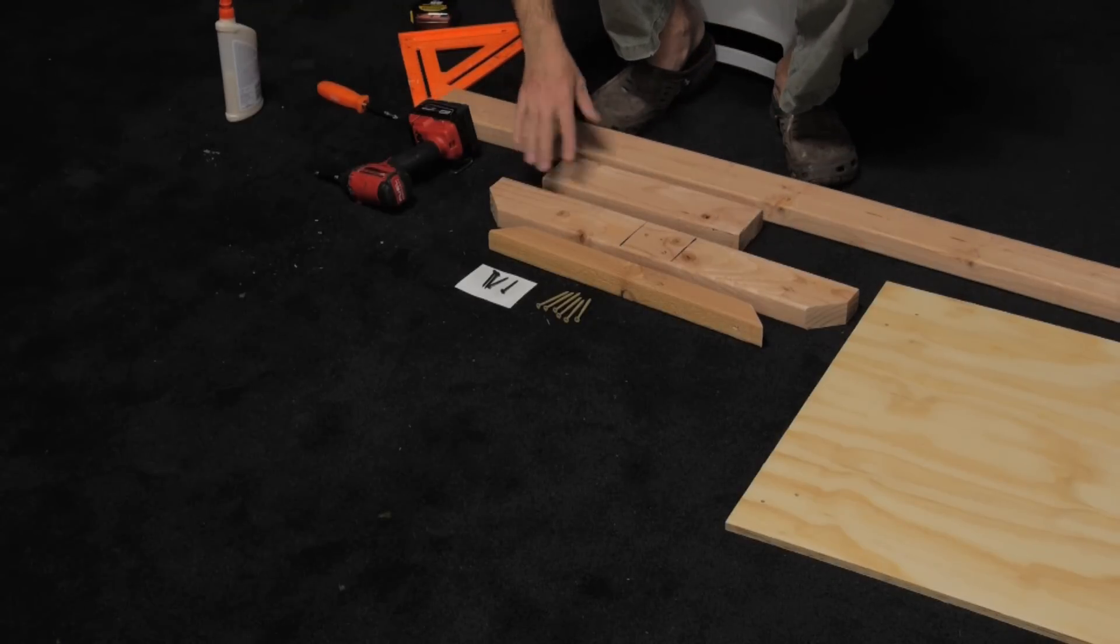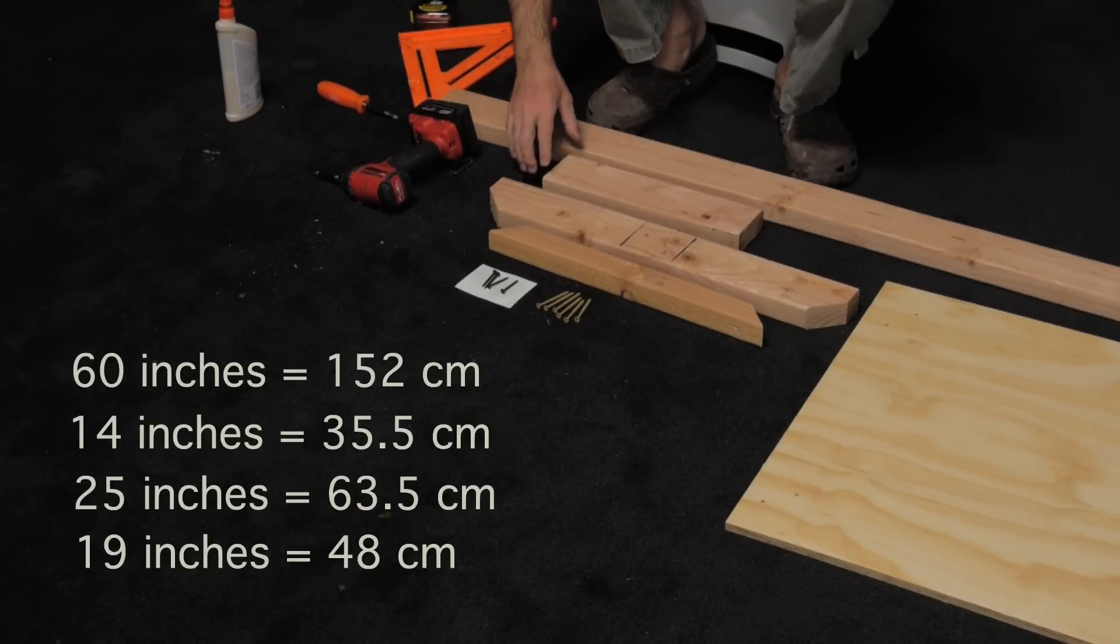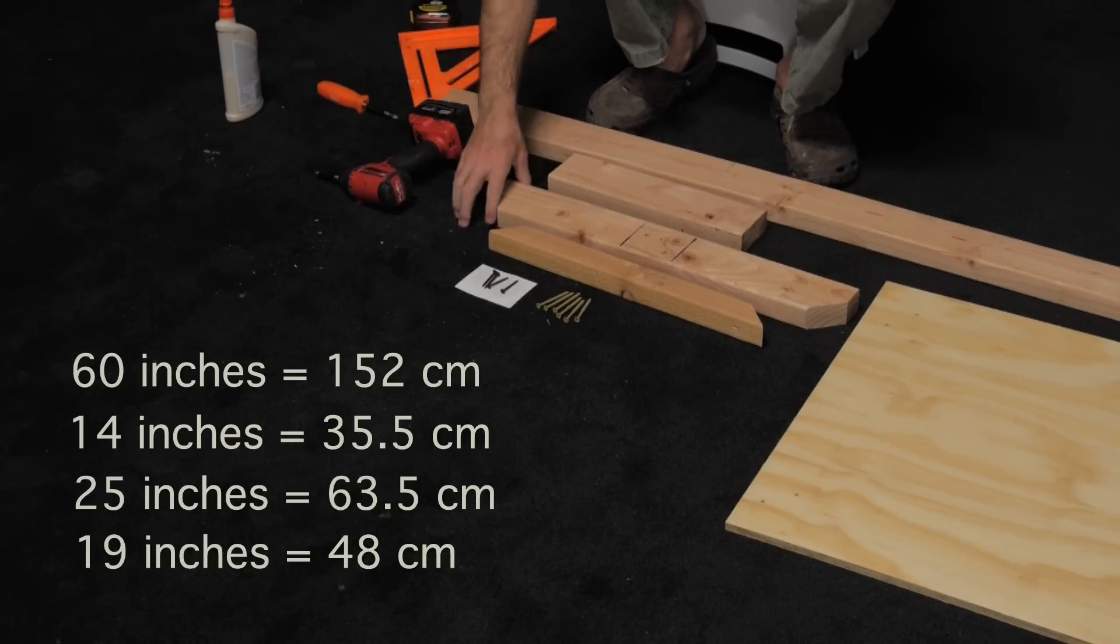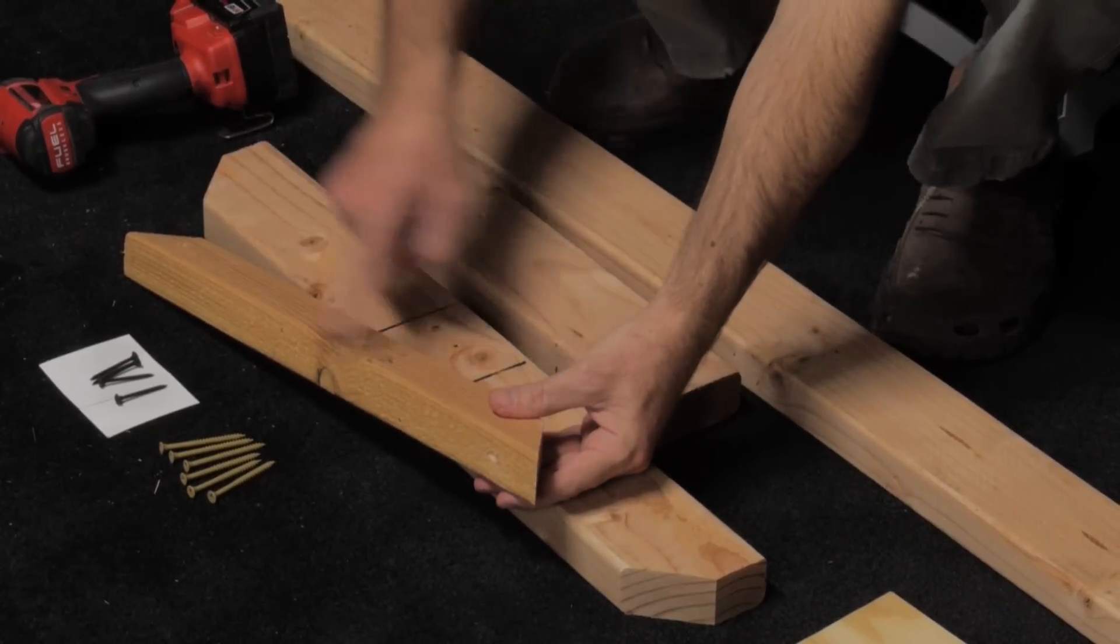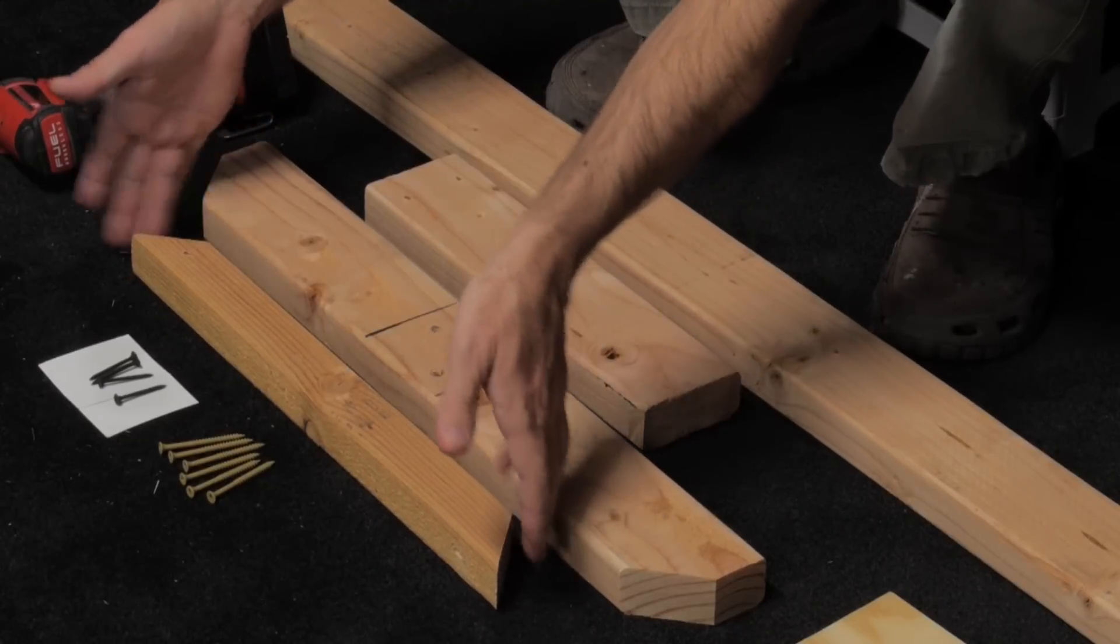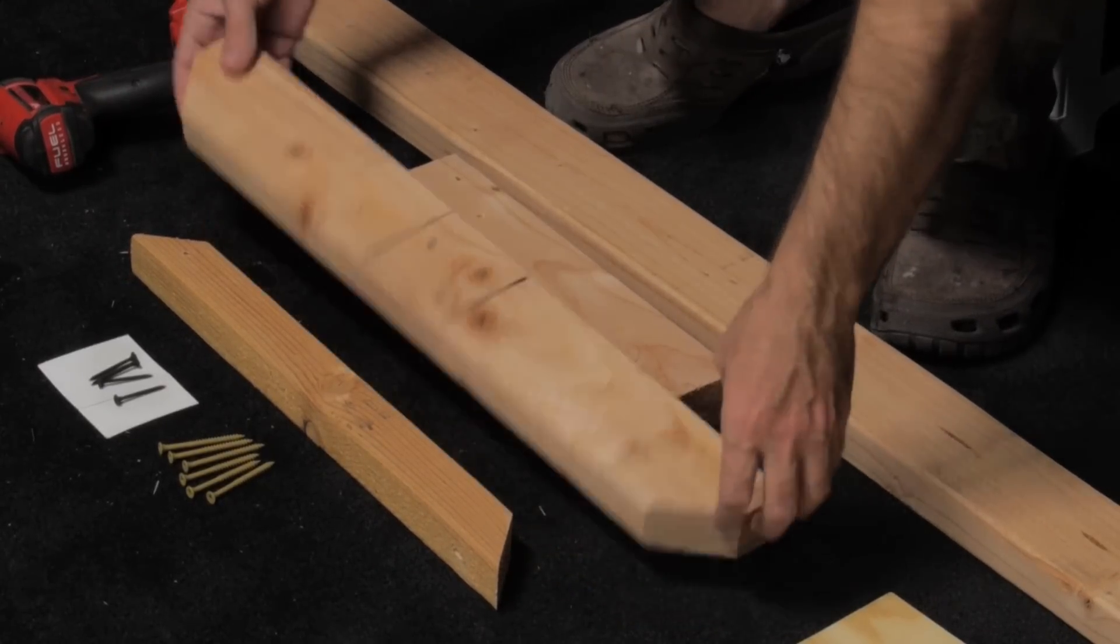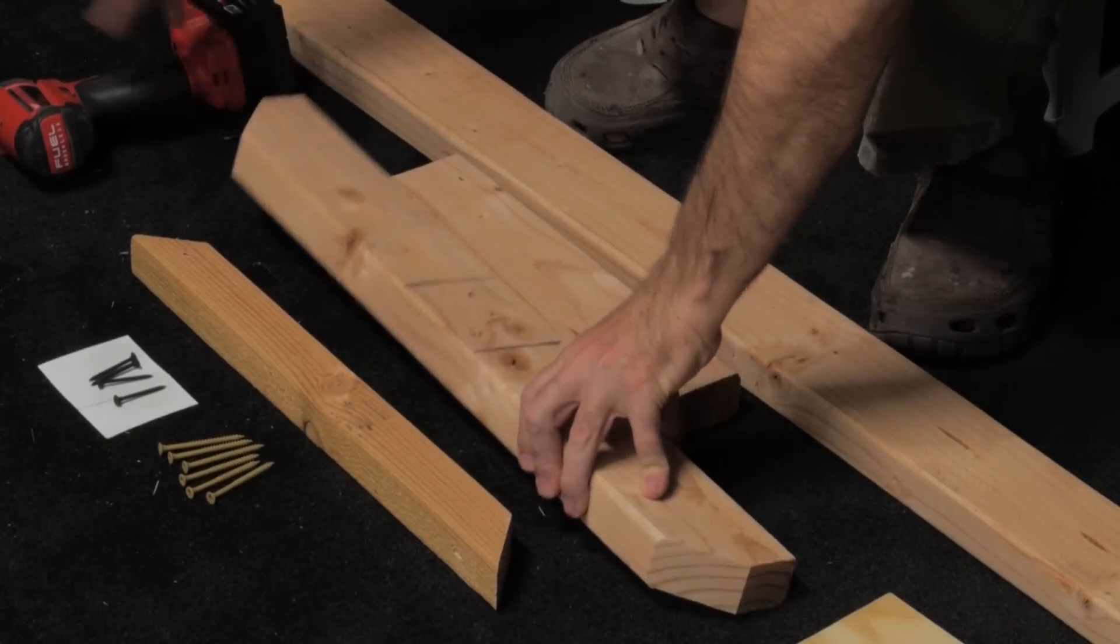This is a two by four. These are all two by fours, these three. This is 60 inches. This is 14 inches, 25 inches, and this one is 19 inches on the long from here to here. This one's cut at 45. This one I've cut the corners off of but you don't have to do that.